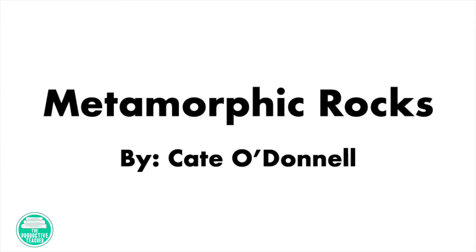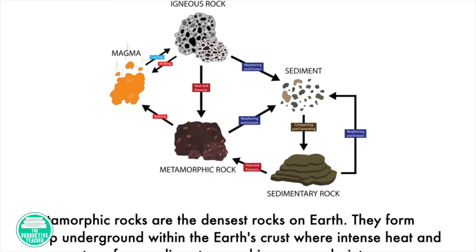Metamorphic rocks, by Kate O'Donnell. Metamorphic rocks are the densest rocks on Earth. They form deep underground within the Earth's crust, where intense heat and pressure transform sedimentary and igneous rocks into metamorphic rocks.